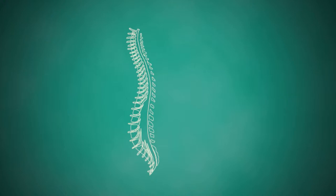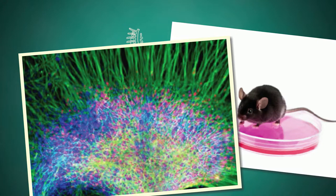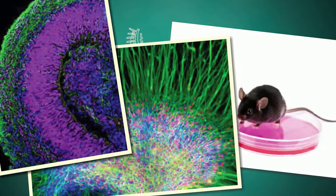Stem cell transplants show promise for treating spinal cord injuries. In rats, neural stem cells were injected into damaged spinal cords, where they wrapped around injured nerve cells and improved the rat's ability to walk.